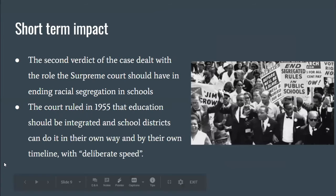The second verdict dealt with the role the Supreme Court should have in ending racial segregation in schools. Both sides argued: Brown argued for prompt desegregation, and the Board of Education argued against desegregation. The court ruled in 1955, just a year after the initial Brown v. Board verdict, that education should be integrated and school districts could do it in their own way by their own timeline with quote-unquote deliberate speed. This ruling was a compromise between both sides, and many Southern states interpreted the timeline provision as meaning they could desegregate as slowly as they wanted, which caused problems with future cases and ongoing segregation in the South.